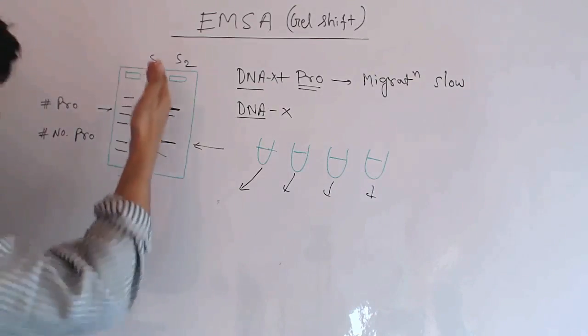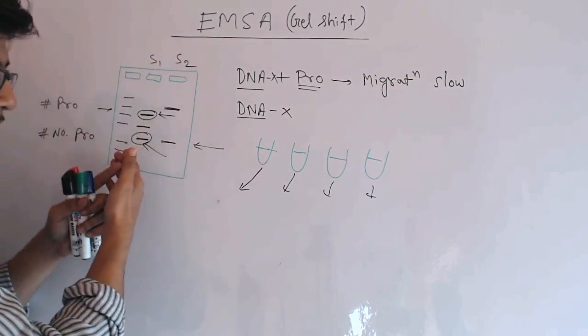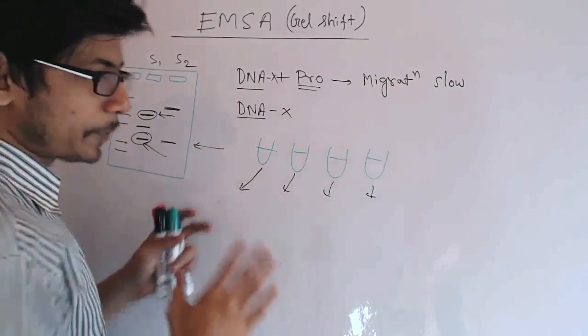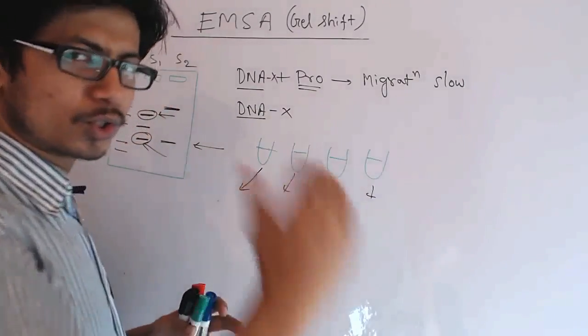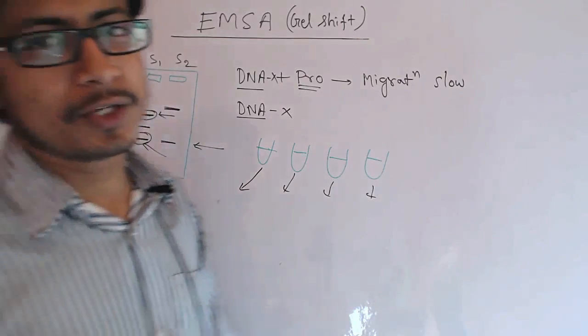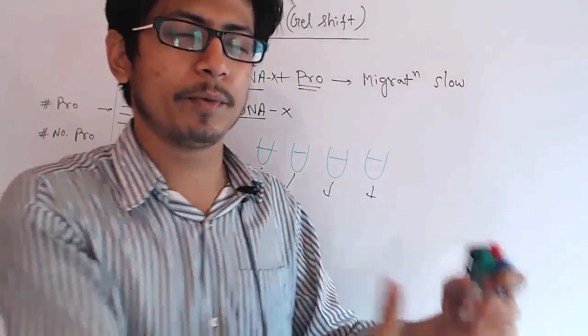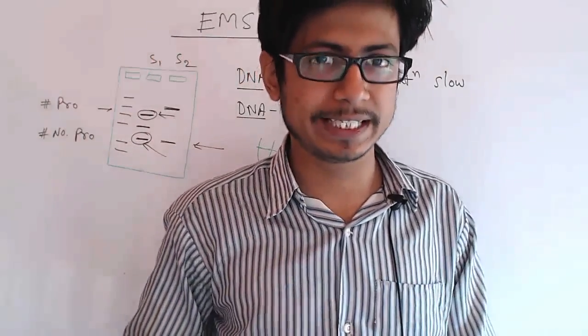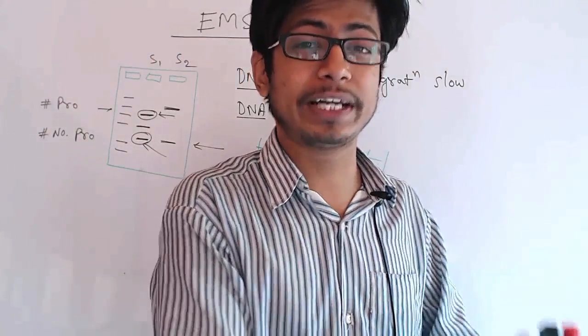Electrophoretic gel, any type, and then you run the gel to find out the scenario based on only one thing: the proteins when involved with the DNA make the DNA go slow. That is the idea. The rest of the thing is very simple. So that in a sense is electrophoretic mobility shift assay, or EMSA, or electrophoretic gel shift assay.